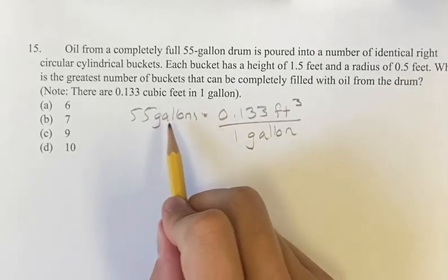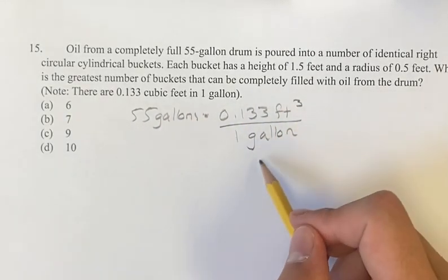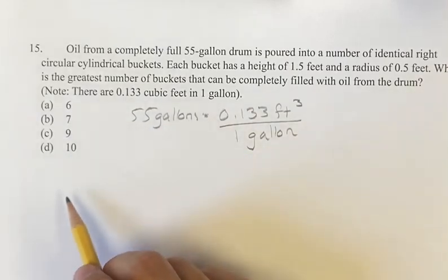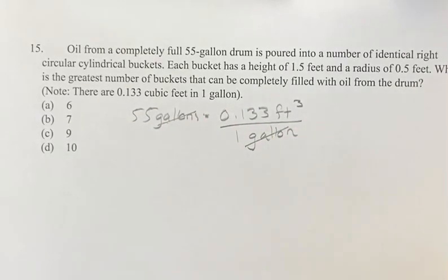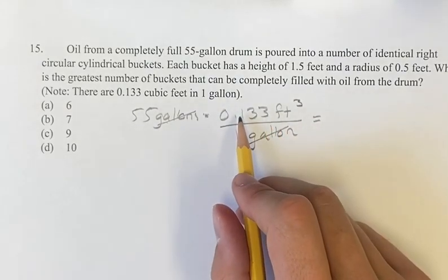Think of this as multiplying 55 gallons by one since these two are the same, dividing each other is just one. So the gallons cancel out and we're left with 55 times 0.133,